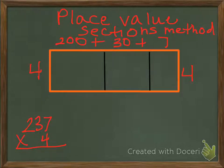So our first problem will be 200 times 4. So you're looking at the 2 and the 4. 4 times 2 is 8, and then you're adding two zeros.